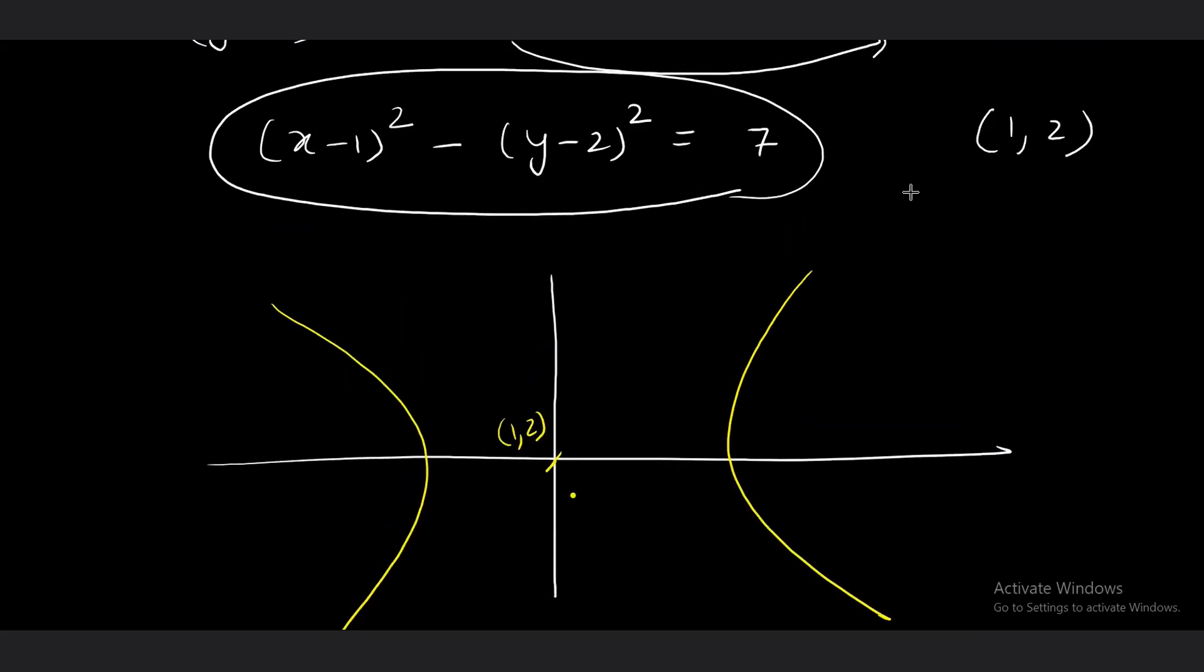As you can see, the asymptotes are going to be, I am going to write it over here. (y - 2)^2 equals (x - 1)^2. That means y - 2 equals x - 1, and y equals x + 1 is one asymptote. And second asymptote will be